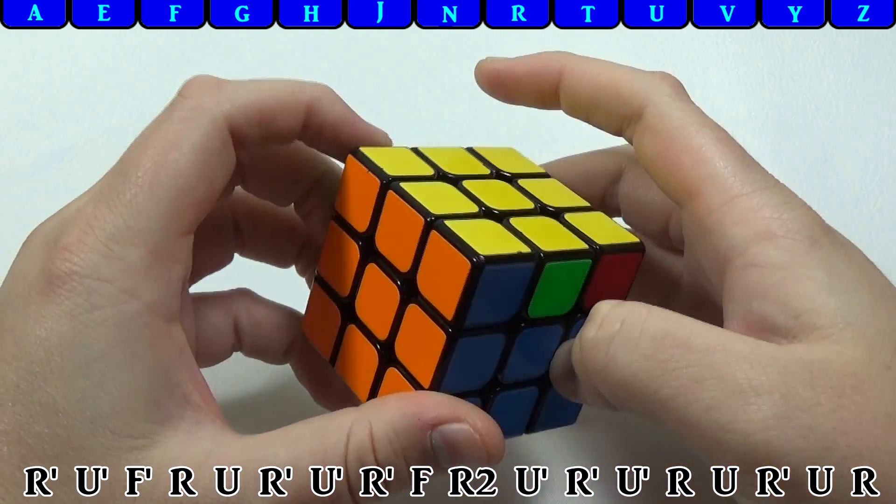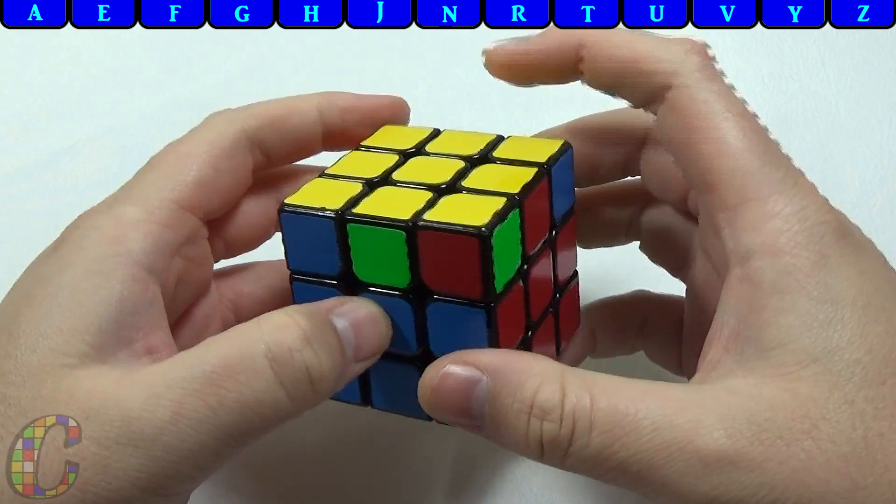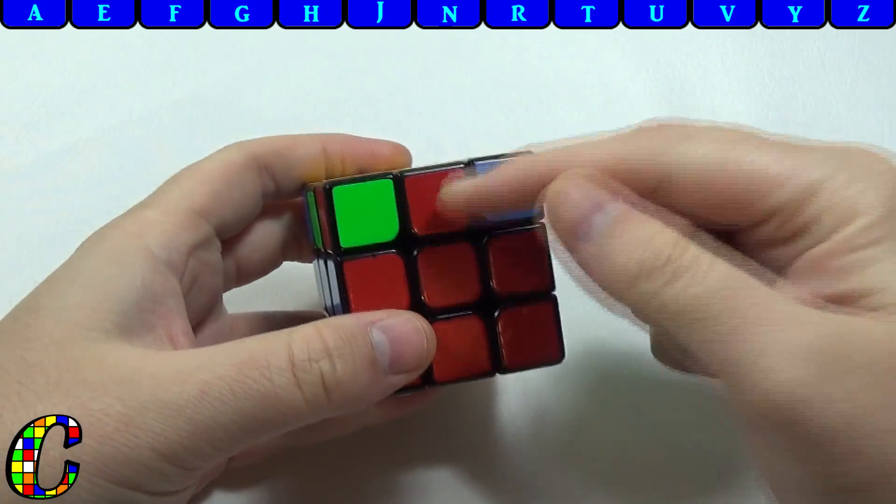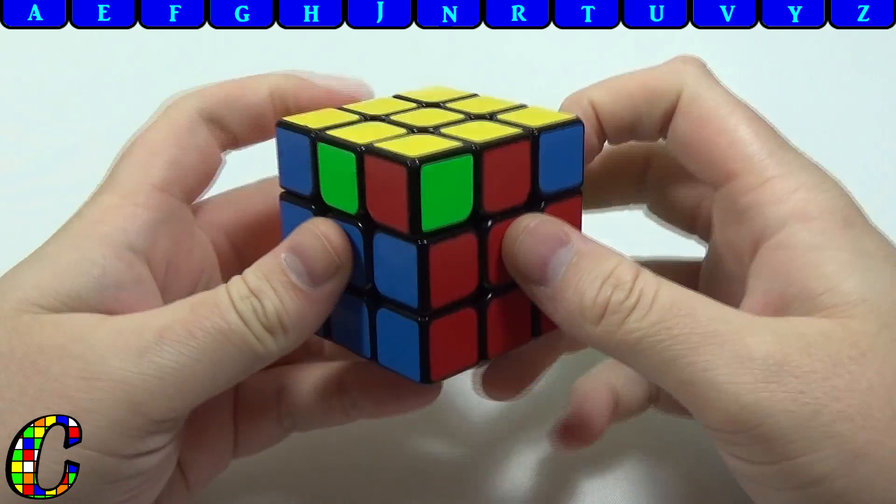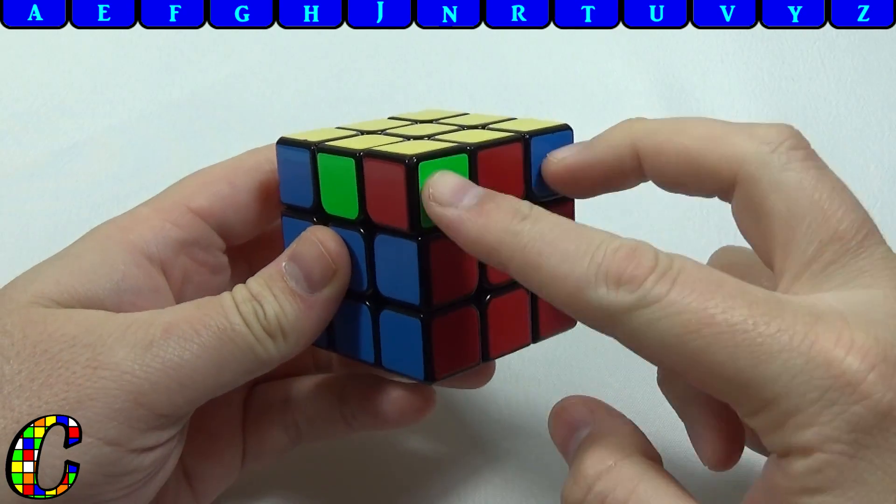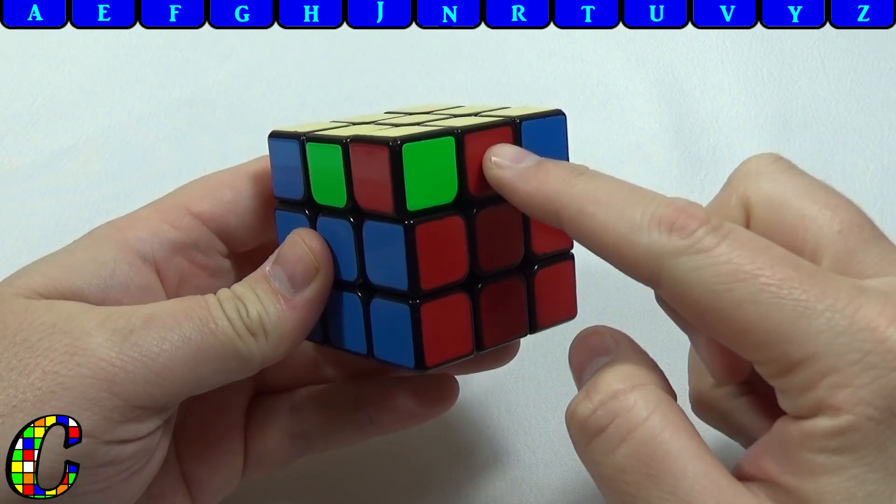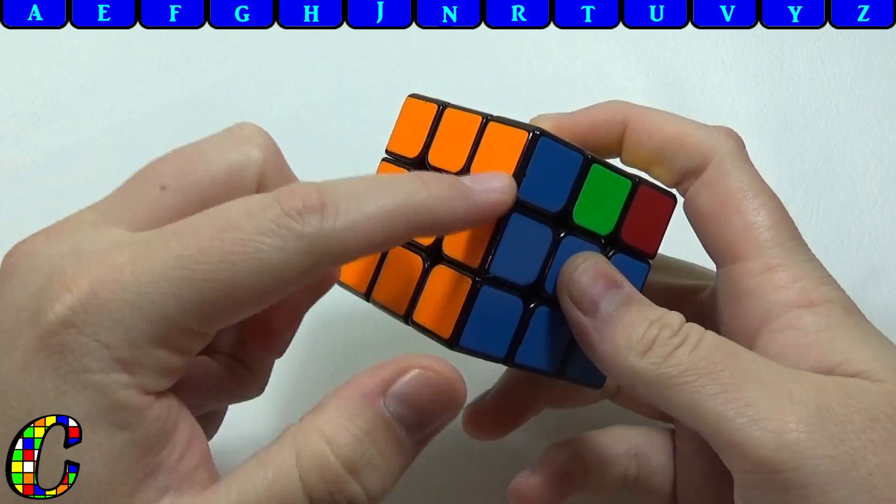Now in order to do AUF with this case, it's another really simple one. The bar is always correct, and the opposing center is always correct. So if you recognize it by seeing opposites here and there, you know that this needs to be permuted in order to have no AUF, and you know that this needs to be permuted.